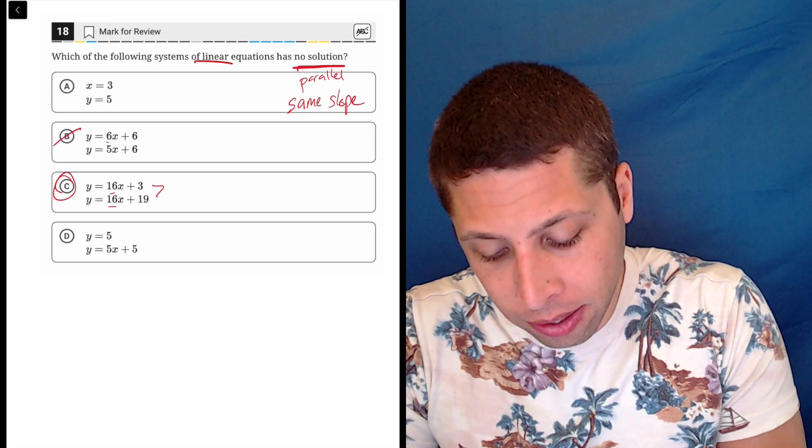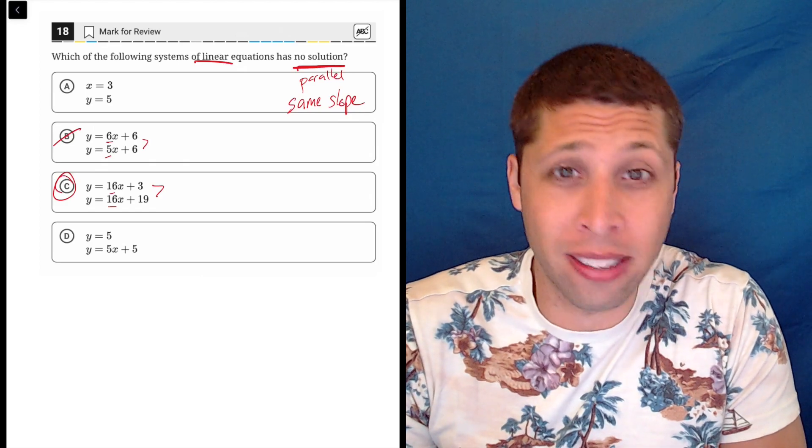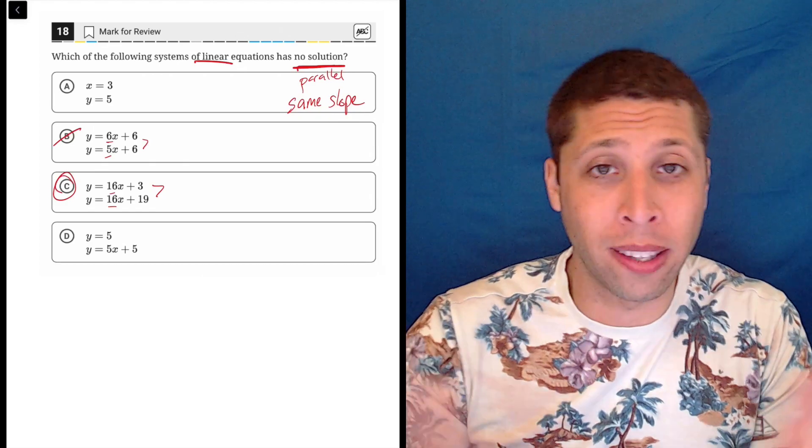Choice B is wrong because the slopes are different. They have the same y-intercept, but that doesn't matter. That has no impact - it just means they intersect once at that point.